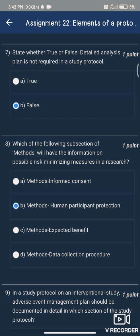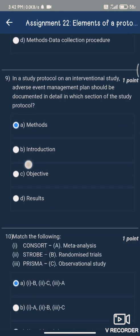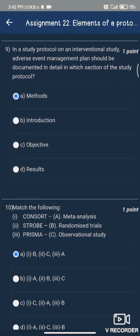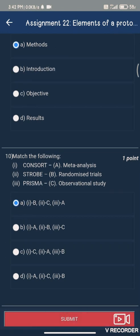Question number nine, the answer is option A, Methods. Question number ten, the answer is option A, where CONSORT is related to option B, Randomized Trials.